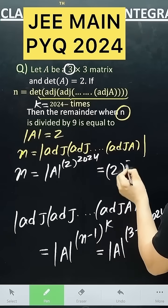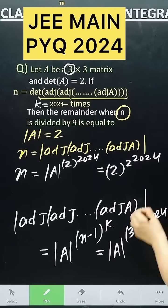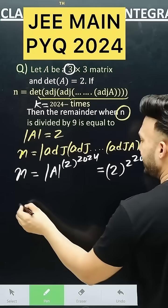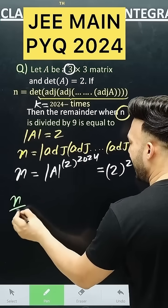Now by what do you have to divide it? You have to divide it by n. You have to divide it by 9. So what do you have to do? You have to find n by 9.